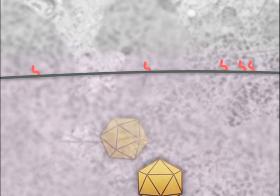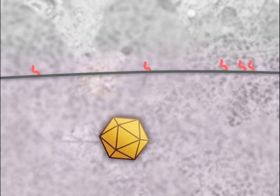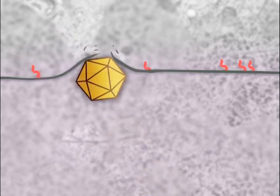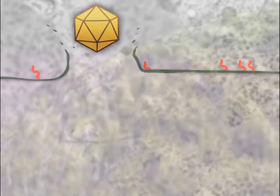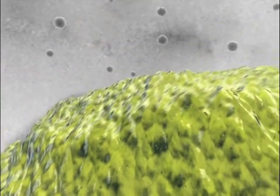Finally, the mature virions make their way to the plasma membrane and exit the cell via lysis. Now the virions are ready to infect new cells.